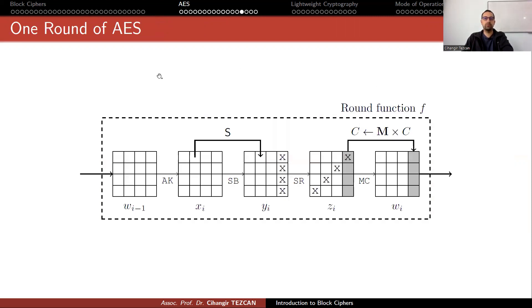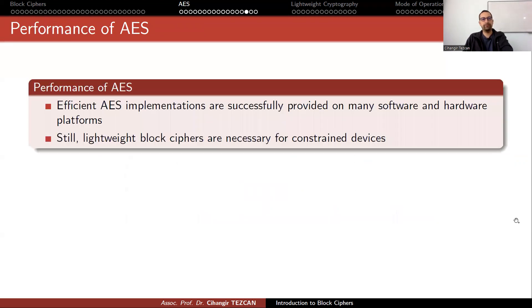Looking at the full round function of AES: you take the input, add the round key, perform the SubBytes S-Box operation, then ShiftRows — rotating everything left — then multiply columns with matrix M to obtain the output. This constitutes one complete round of AES.